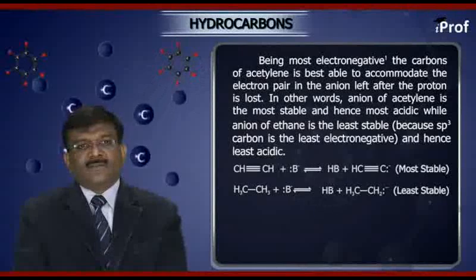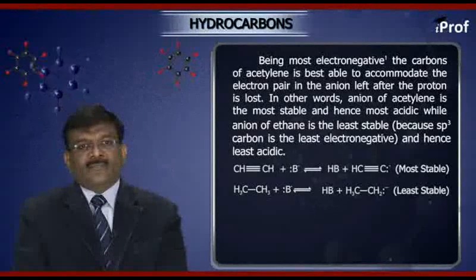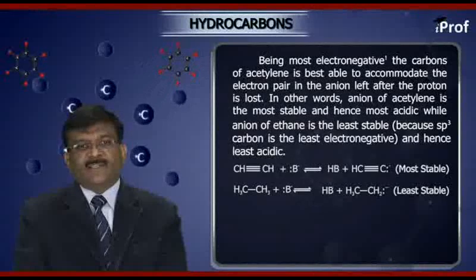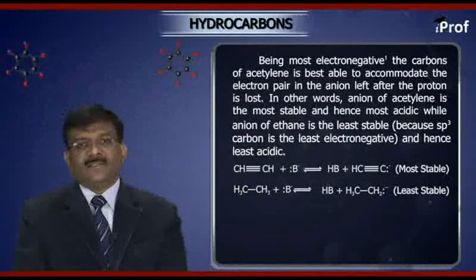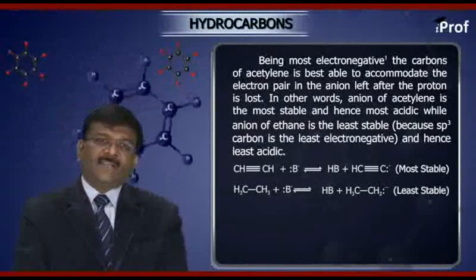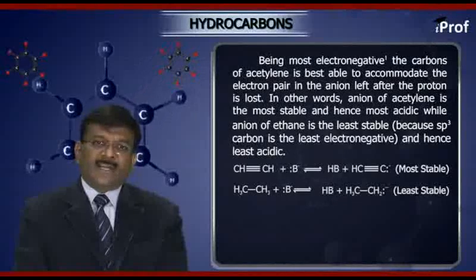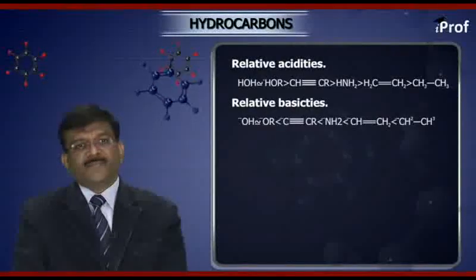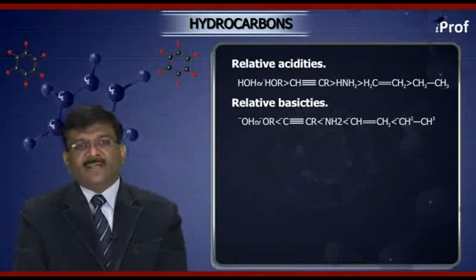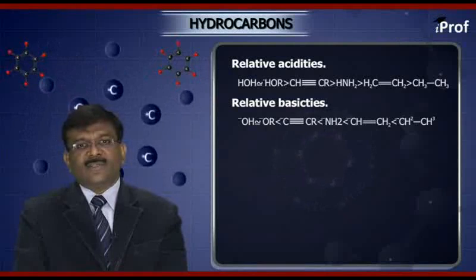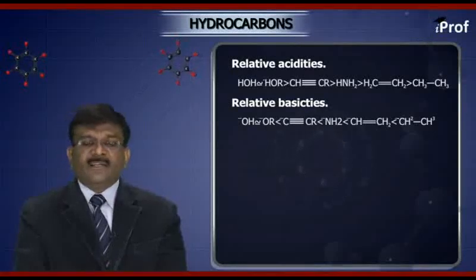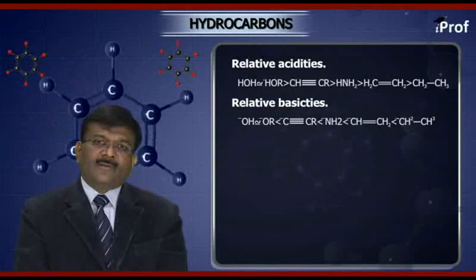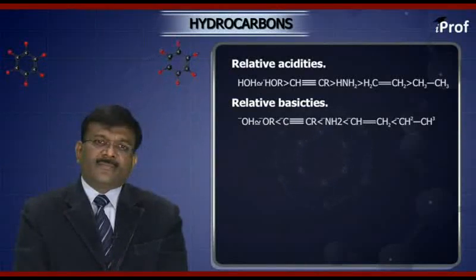For acetylene: HC≡CH + B⁻ → HB + HC≡C⁻ (this carbanion is more stable). Whereas for ethane: CH₃–CH₃ + B⁻ → HB + CH₃–CH₂⁻ (this carbanion is the least stable). The relative acidities are: RC≡CH > H–N (sp2) > C=C (sp2) > C–C (sp3). The relative basicities follow the reverse order.